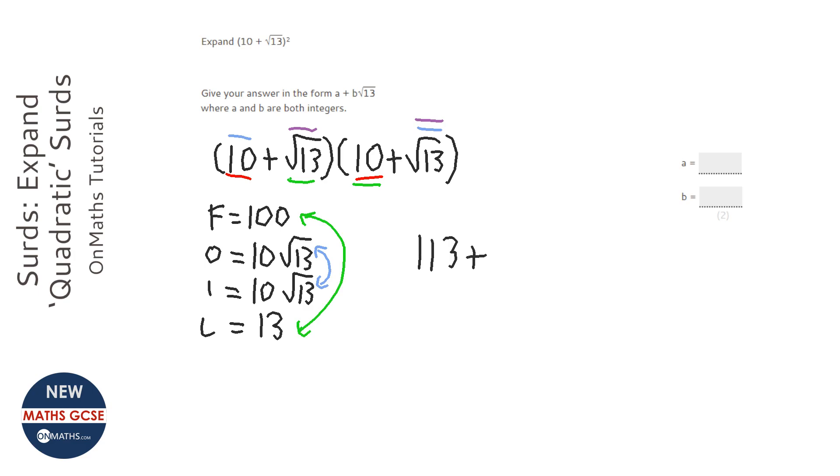plus, and we've got 10 lots of root 13, plus another 10 lots of root 13. So that's 20 lots of root 13. So it says it wants it in the form A plus B root 13. So A will be 113, and B will be 20.